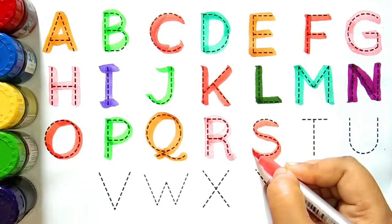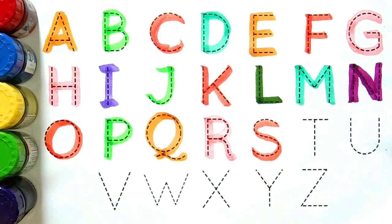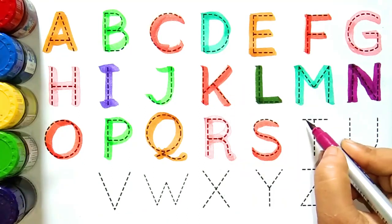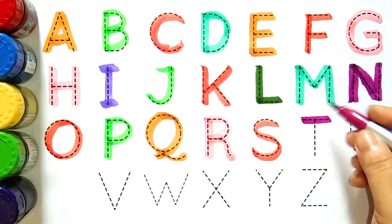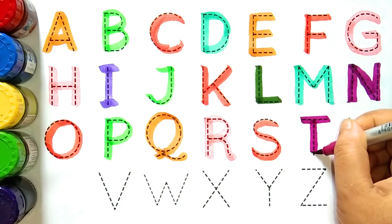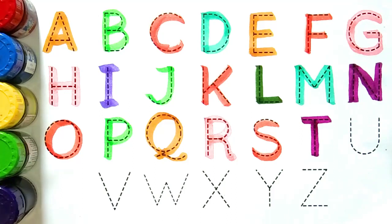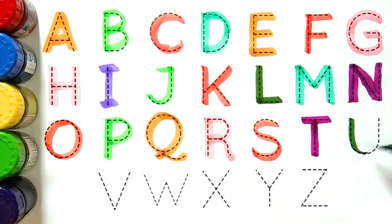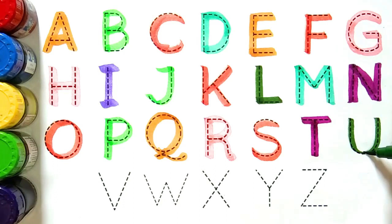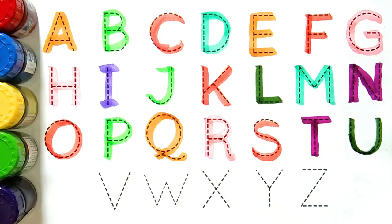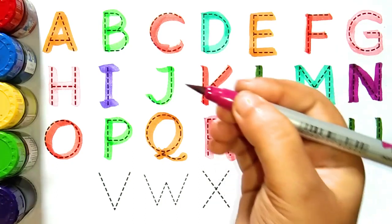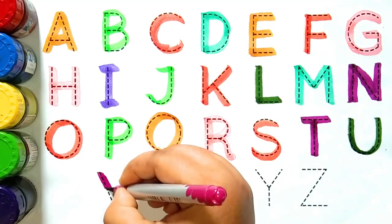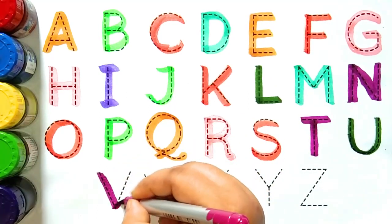R, R for rabbit. R for kya hota hay bacho, R for hota hay rabbit. Orange color. S, S for snake. S for kya hota hay bacho, S for hota hay snake. Magenta color. T, T for trophy. T for kya hota hay bacho, T for hota hay trophy. Green color.